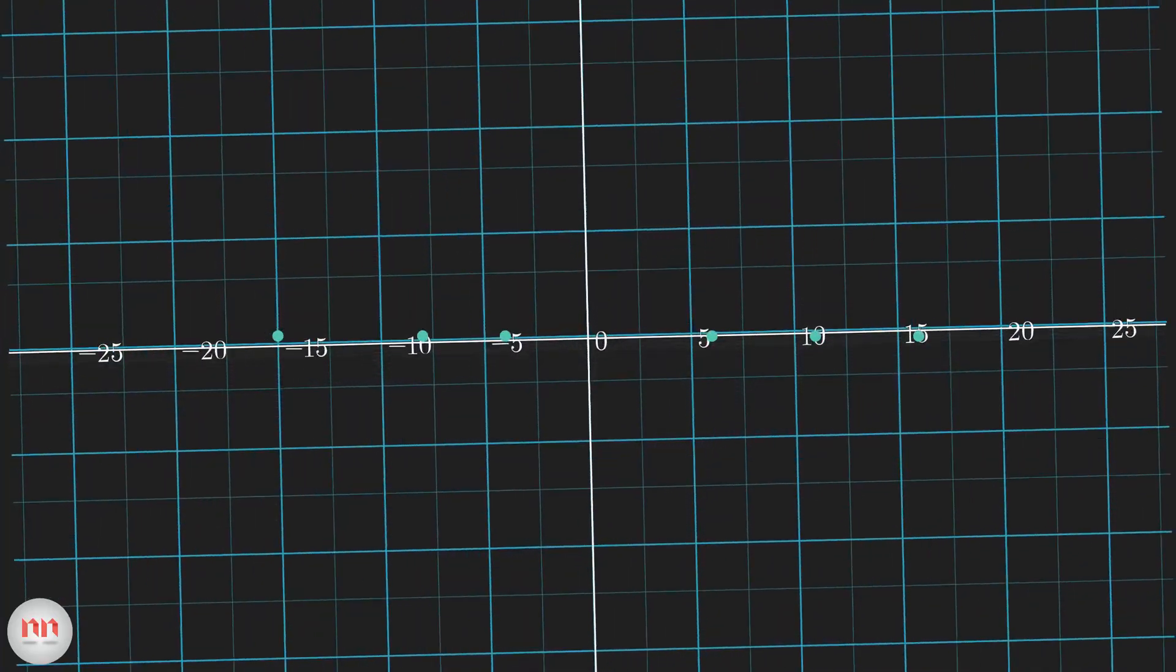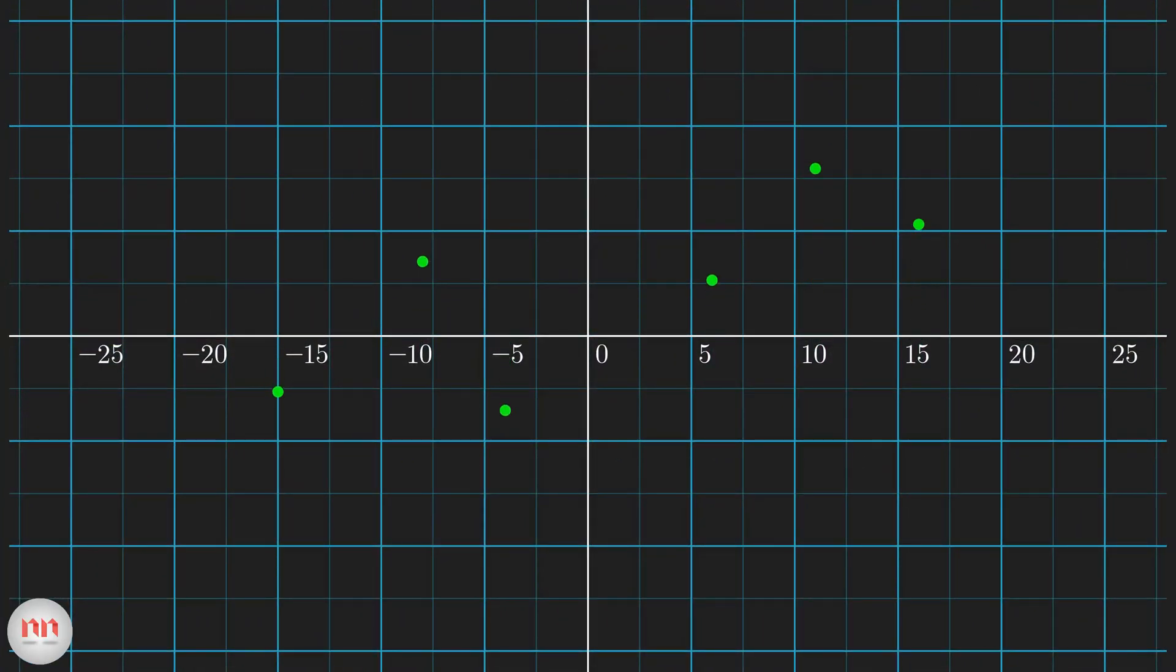I am assigning another number to each of the points to make the data set two-dimensional. So, now we are dealing with two variables. So far, we know the x variance of the points. Similarly, we can also compute the y variance. And the y variance is 25.9.